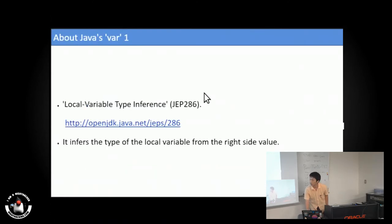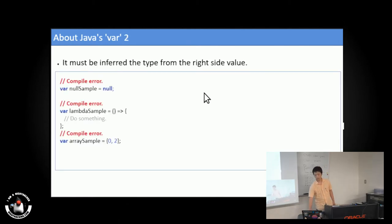The official name is local variable type inference. It infers the type from the right side value. If the type cannot be inferred, a compiling error occurs.